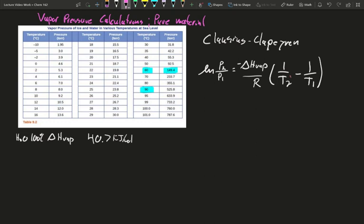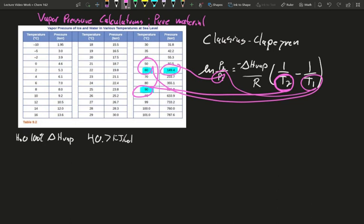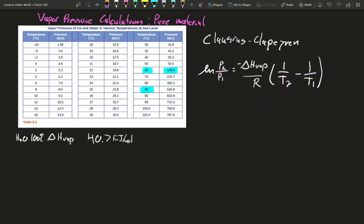This means I have my second temp, that's 90. I have my first temp, that's 60. And I have my first pressure, that's 149.4. What I'm trying to find is pressure 2. What would that pressure at 90 degrees be? How close is it to the table value here? Well, let's solve. I have natural log of P2 over P1, which I can separate into the natural log of P2 minus the natural log of P1, or 149.4.